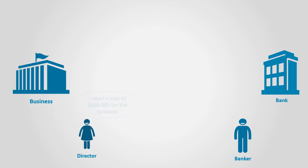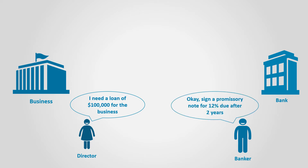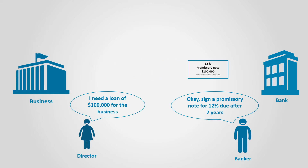Another example may be that a business asked the bank to lend it money for two years. The bank will agree to lend the money if the business signed a promissory note to pay the amount of the loan, which is $100,000 in our case, in two years and pay an annual interest of 12%. This is what we call notes payable.